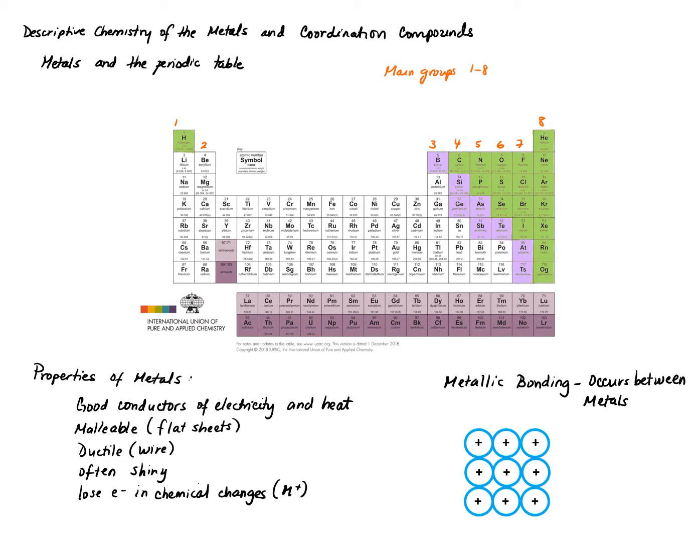Some properties of metals in general: they are good conductors of electricity and heat. They can be shaped into sheets — that's how we get aluminum foil — and they're ductile because we can shape them into wires. They're often shiny. A key chemical property is that metals always lose electrons in chemical changes, so metals form positive ions or cations.